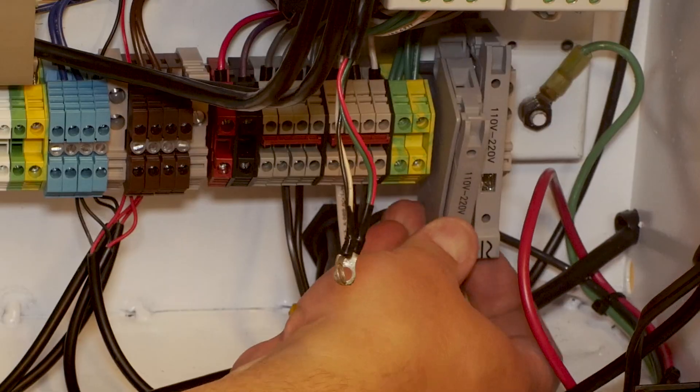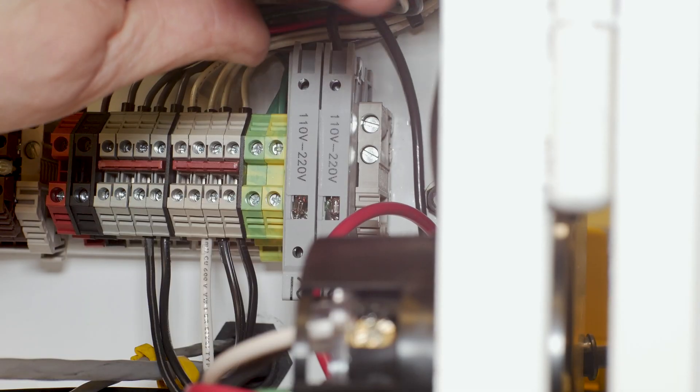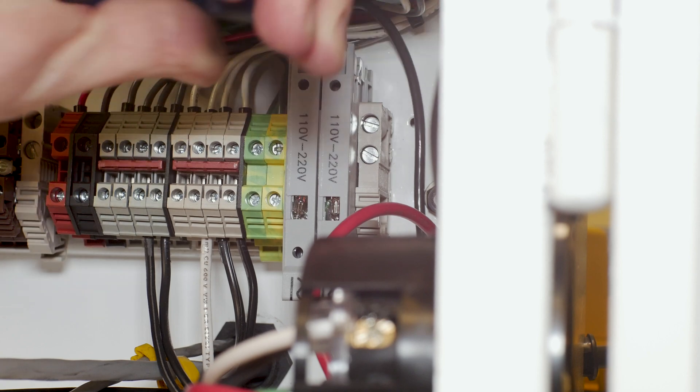Up to this point, I wasn't completely sure how I was going to handle the incoming AC power. I ended up installing two DIN rail mount fuse holders, one on each hot leg of the incoming 240 volt line.